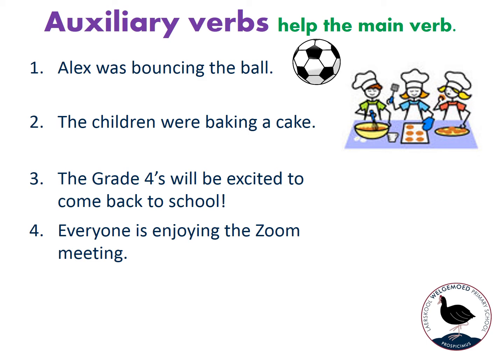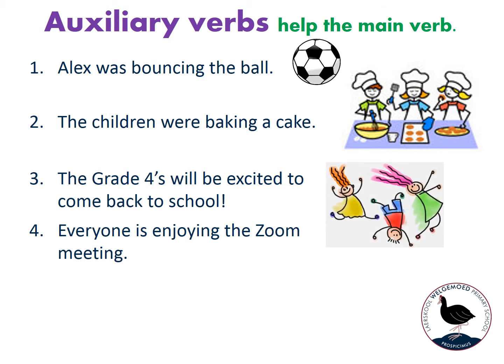Let's look at the third sentence: 'The grade fours will be excited to come back to school.' Let's identify the main verb — that's right, 'excited'. So which little words are helping the main verb so that it makes sense? The auxiliary verbs are 'will be': 'The grade fours will be excited to come back to school.'